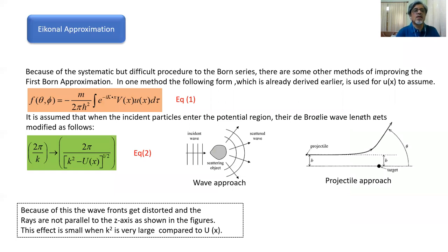What is the eikonal approximation? A very simple approximation is made, and that is shown in this first slide. Because of the systematic but difficult procedure of the Born series — we have already seen in our last lecture it is an infinite series, and each term becomes bigger and more complicated — there are some other methods of improving the first Born approximation.